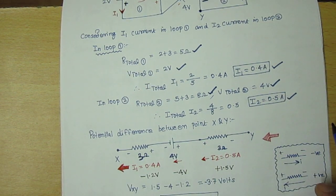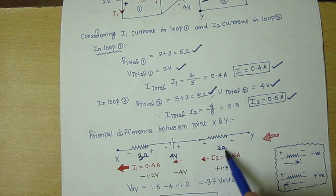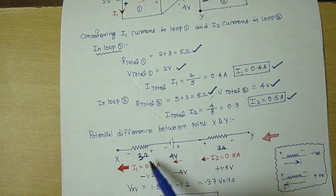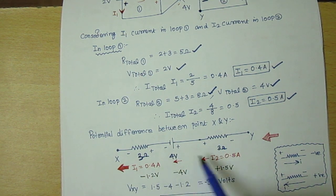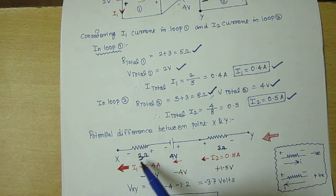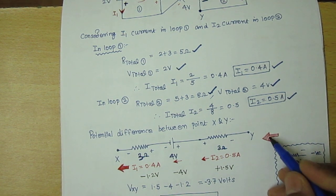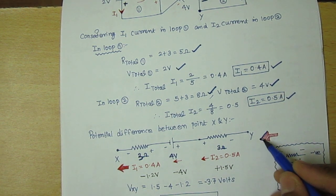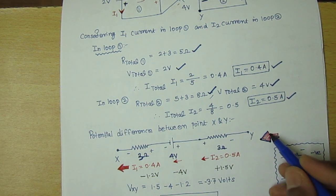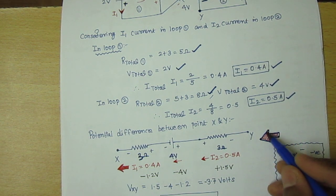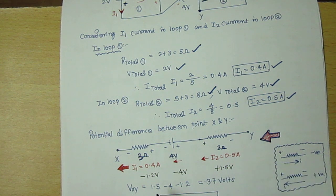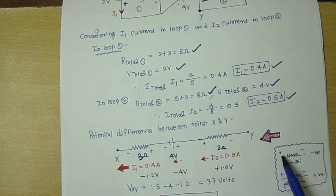Here we have 3 ohms, 4 volt, and 3 ohms as given in the question. Current I2 is flowing in loop 2 and I1 in loop 1. For finding V_XY, we are supposed to move in the backward direction — from the Y terminal to the X terminal. We know that from higher potential to lower potential is a voltage drop, so we put a negative sign.